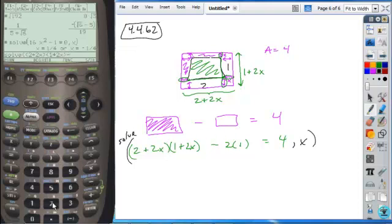We're going to subtract two, the area of our inner rectangle. Set that equal to four and solve for x. And when we do that, we get our solution.